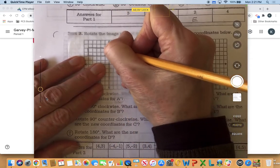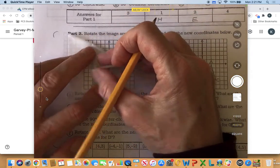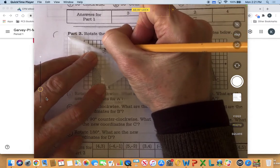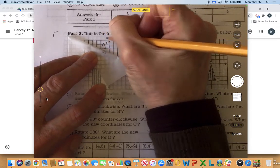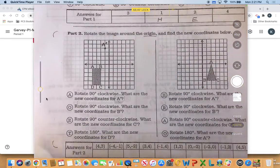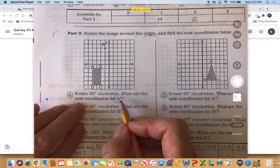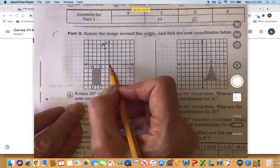Okay, and a ended up there, so I'm going to gently peel this back and make a mark and say that is a prime. So now I know where a prime is and it says what are the new coordinates.